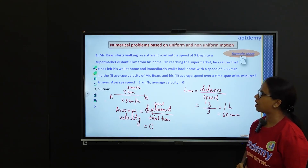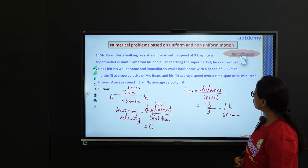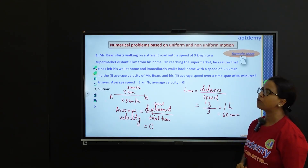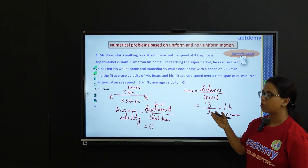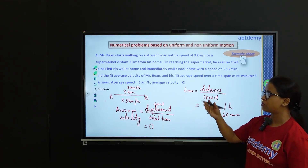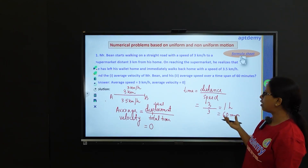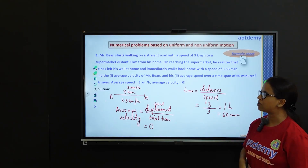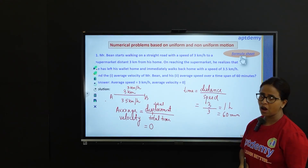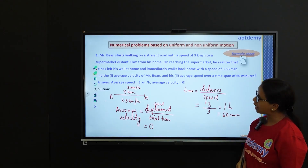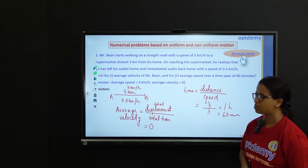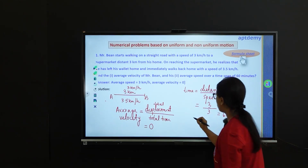We have been asked to find out the average speed over a time span of 60 minutes. If Mr. Bean is travelling from his home to the supermarket in a time of 60 minutes with a speed of 3 km per hour, then that speed itself is the average speed in this case. So the average speed here is 3 km per hour.